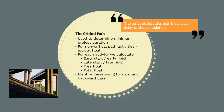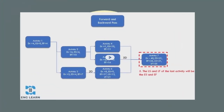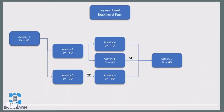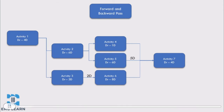Activities on the project critical path will have a total float of zero. Therefore, a delay to one of these activities delays the project completion. We can calculate float using a forward and backward pass of the network schedule. We'll go through first a forward pass to calculate the early start and early finish for each activity, and then a backward pass to calculate the late start and late finish. Float can then be calculated based on the difference between early start and late start. This will allow us to identify the project critical path. So let's look at a slightly more complicated network schedule with seven different activities.